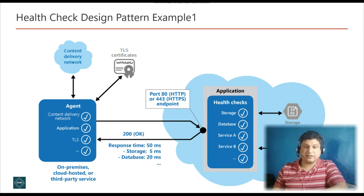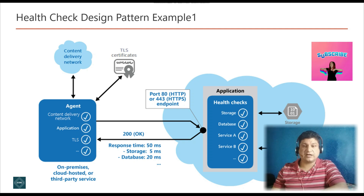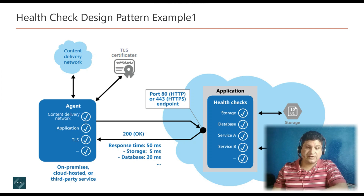Now let's understand the health check design pattern with a real-world example. It's a good practice to monitor web applications and back-end services. Monitoring helps ensure that applications and services are available and performing correctly. Business requirements often include monitoring. It's sometimes more difficult to monitor cloud services than on-premise services — one reason is that you don't have full control of the hosting environment. Another is that services typically depend on other services that platform vendors and others provide. Many factors affect cloud-hosted applications, such as network latency, performance and availability of underlying compute and storage systems, and network bandwidth between them.